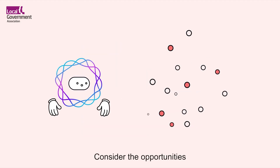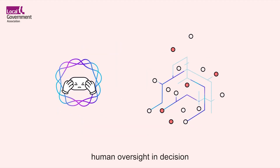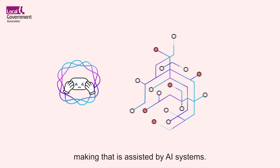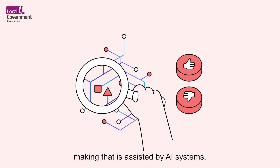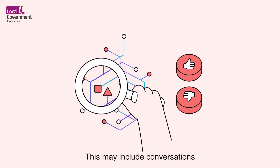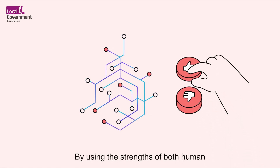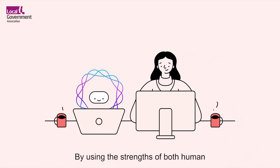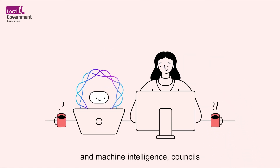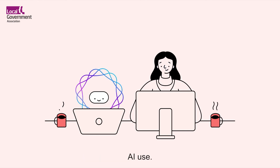Consider the opportunities in your council for meaningful human oversight in decision making that is assisted by AI systems. This may include conversations with suppliers and partners. By using the strengths of both human and machine intelligence, councils can improve the accuracy, trustworthiness and fairness of their AI use.